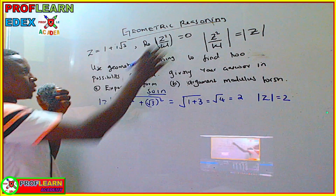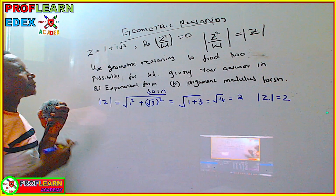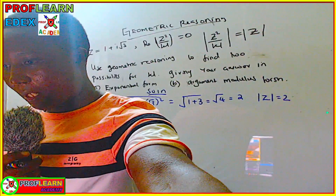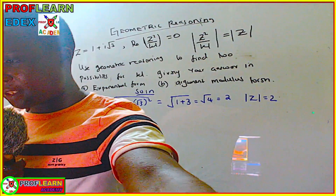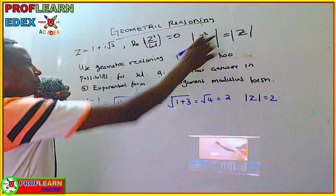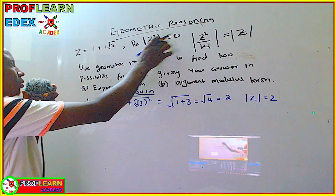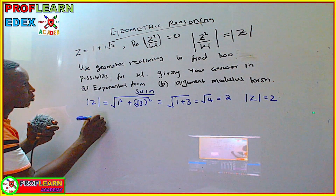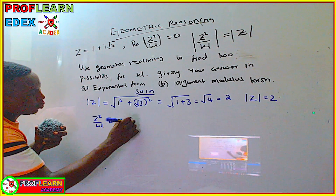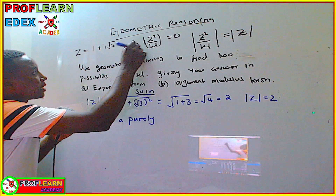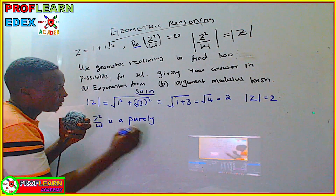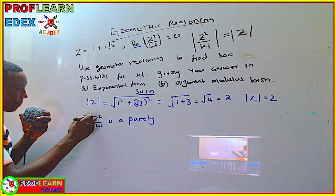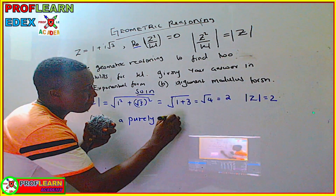We are told that the real part of z²/w is 0. This means z²/w is a purely imaginary number, since a purely imaginary number has real part equal to zero.